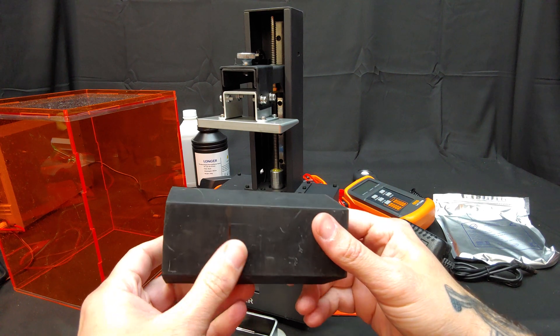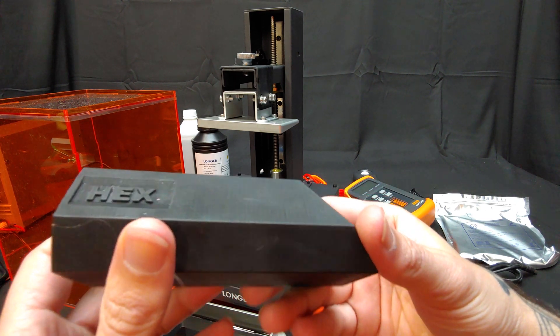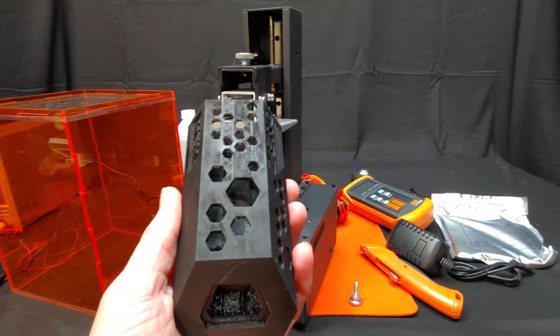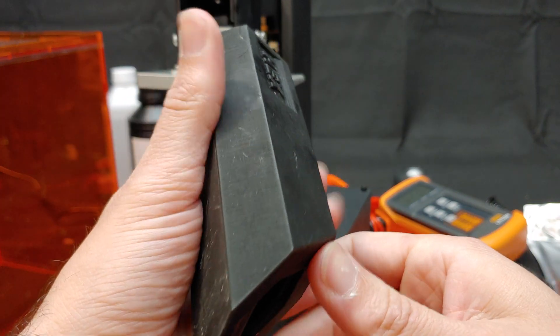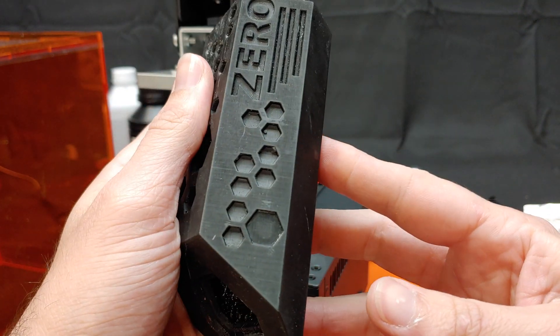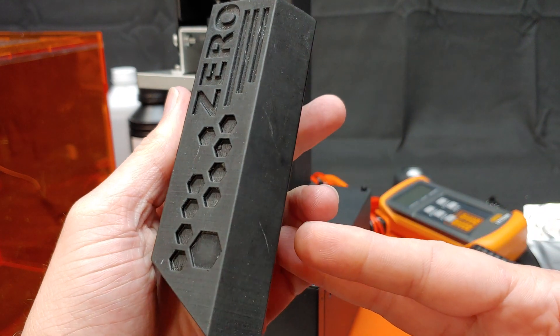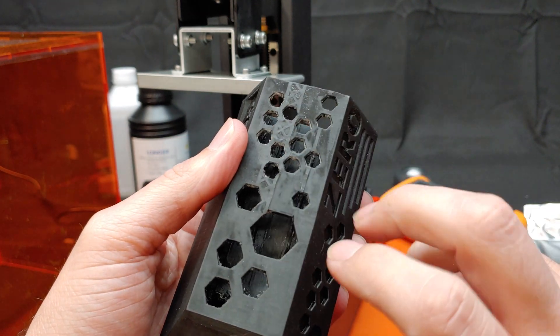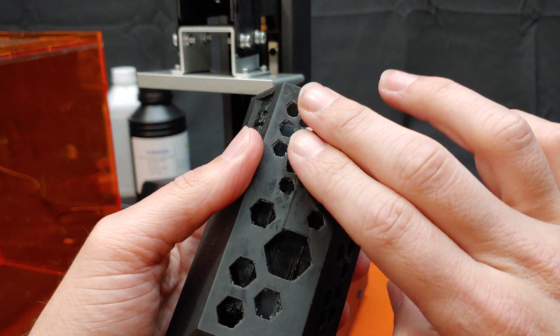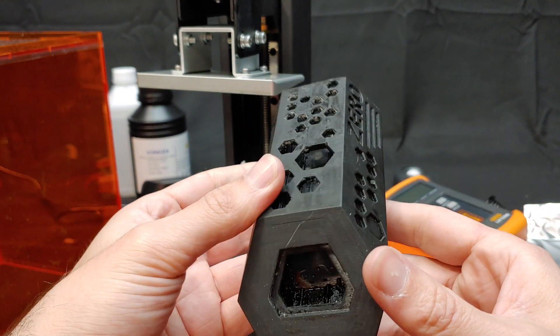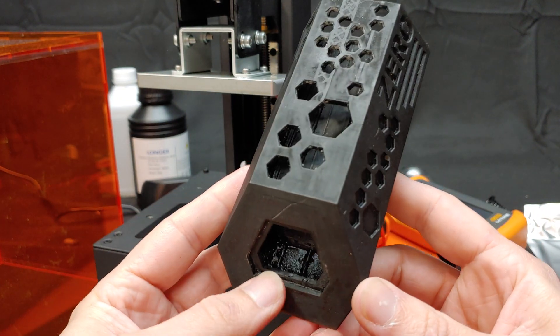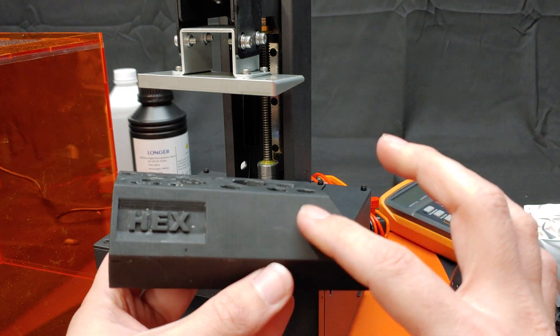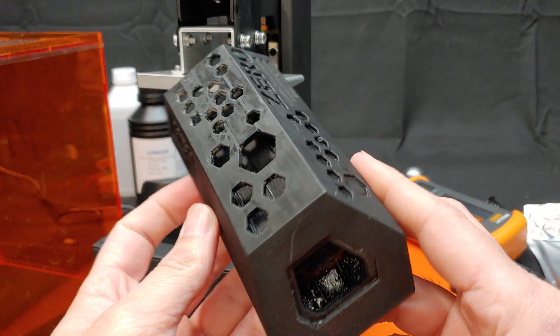I did virtually no finishing to this at all and this is what the surface looked like. Let me get a closer view for you. Again this is without any real finishing. I just cleaned off the excess resin with some isopropyl alcohol and I tried to grind off the support struts that were computer generated before I realized that I had already made a number of mistakes. You can see I couldn't clean up the inside very well.